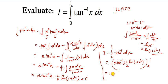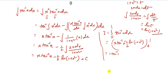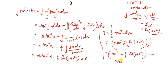Substituting the limits: at x = 1, we get 1·tan inverse 1 minus one-half of ln(1 plus 1 squared). Then minus, applying x = 0: 0·tan inverse 0 minus one-half of ln(1 plus 0). The term 0·tan inverse 0 is 0, and ln(1) is also 0, so that whole bracket is zero.